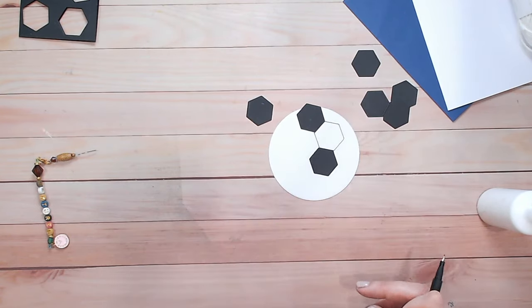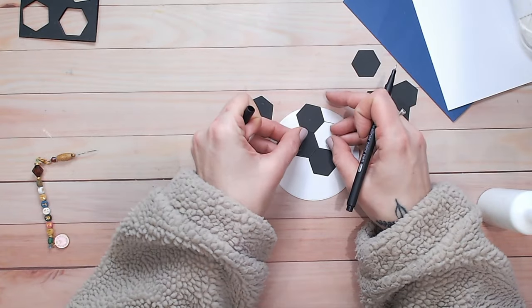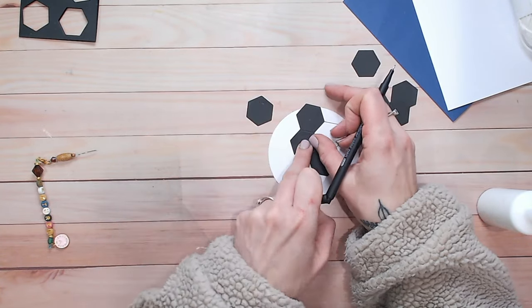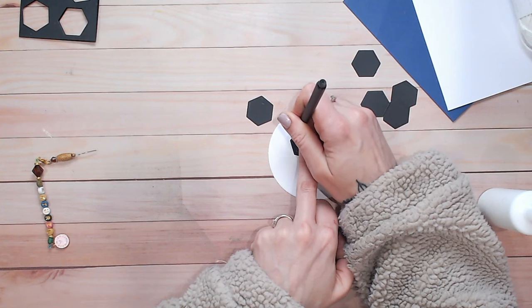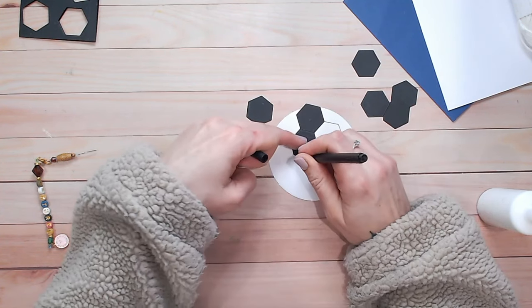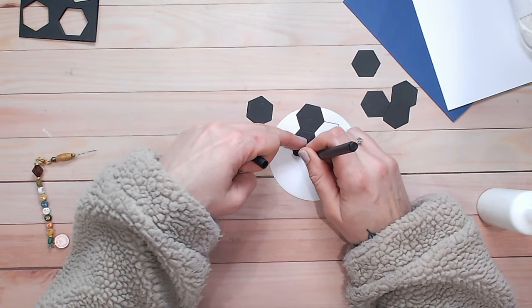So I've done this over the entire circle and at first I was thinking, oh there's not going to be enough hexagons that are black, it's going to look a bit odd but actually it worked out really well in the end.